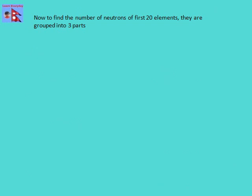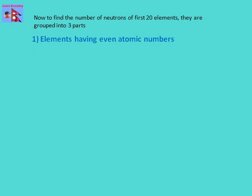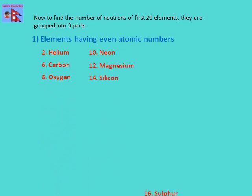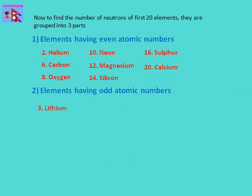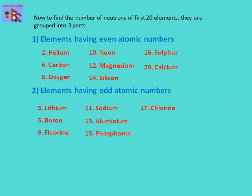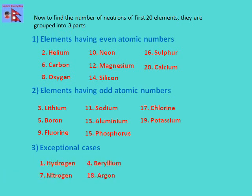The first 20 elements are grouped into three main parts. The first group is elements having even atomic numbers: helium, carbon, oxygen, neon, magnesium, silicon, sulfur, and calcium. The second group is elements having odd atomic numbers: lithium, boron, fluorine, sodium, aluminium, phosphorus, chlorine, and potassium. Finally, the exceptional cases are hydrogen, beryllium, nitrogen, and argon.